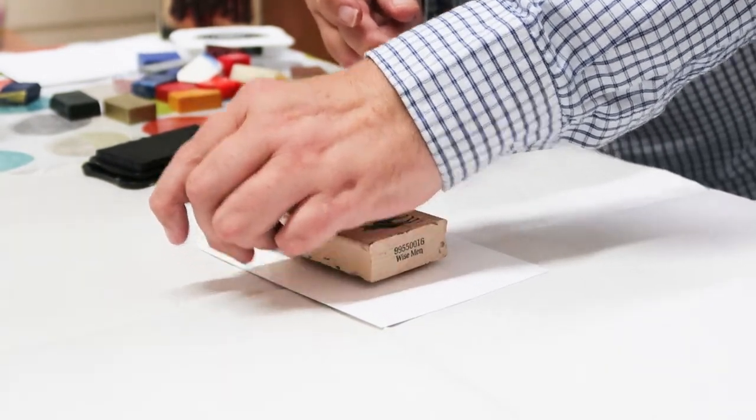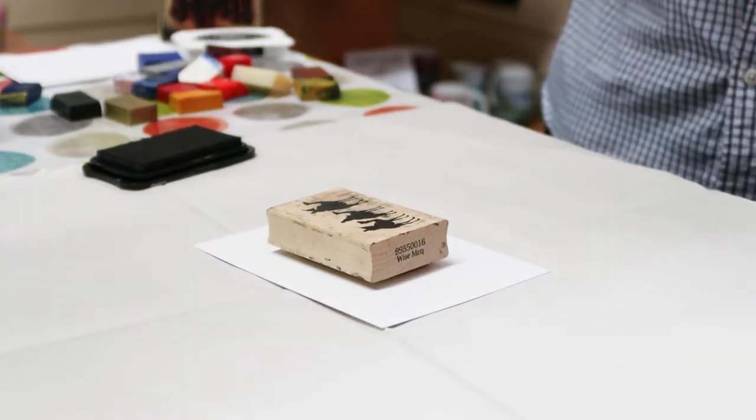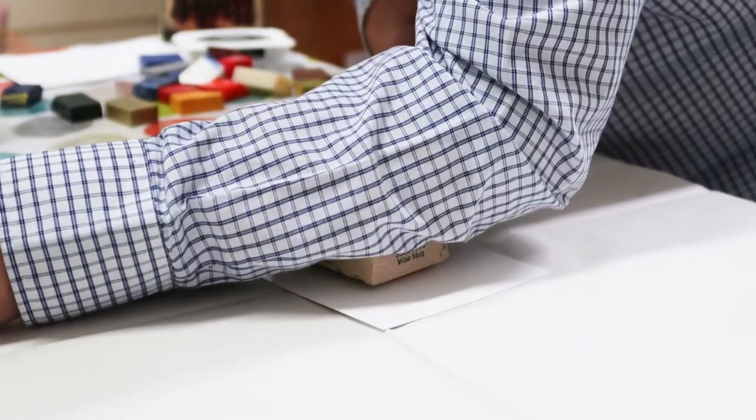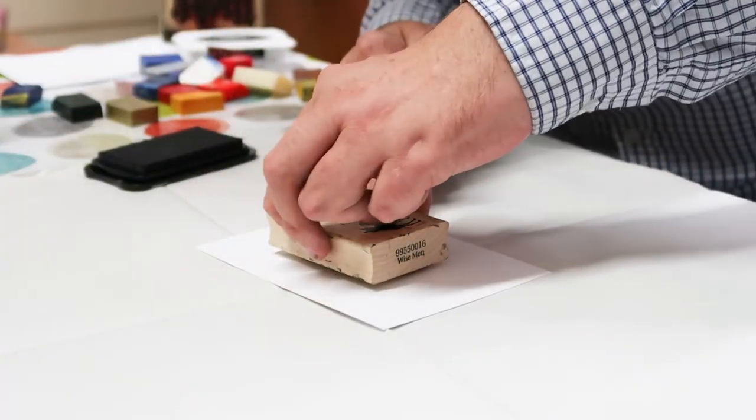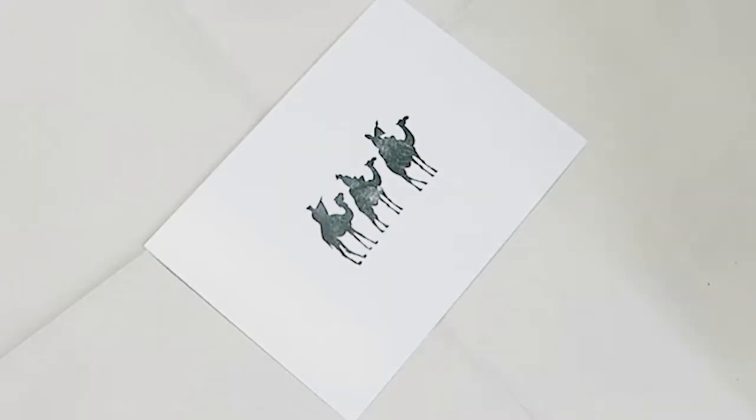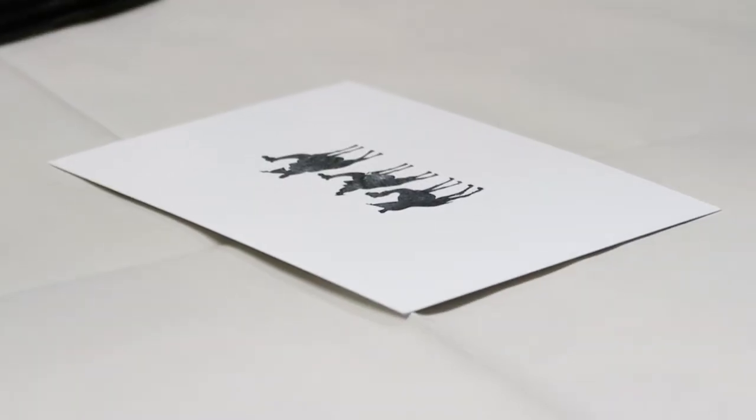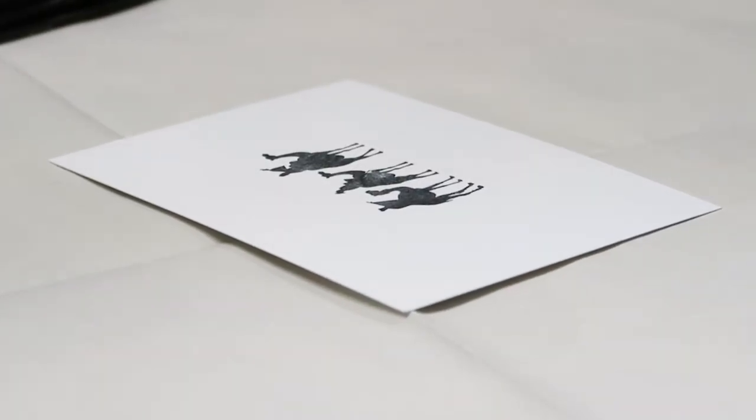If you struggle to get enough pressure with your hands, you can use part of your arm. You just want a nice even pressure. There we go, three wise men. If you're going to use stamping with your encaustic art, you need to do this prior to applying any wax to the shiny card, otherwise the ink will resist against the wax and won't dry.